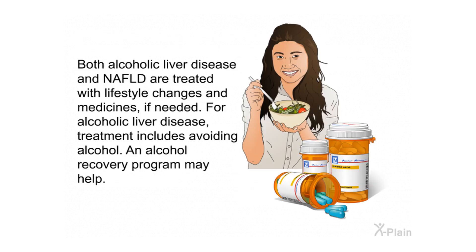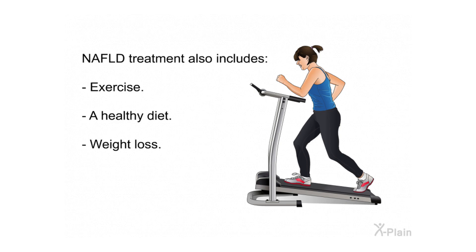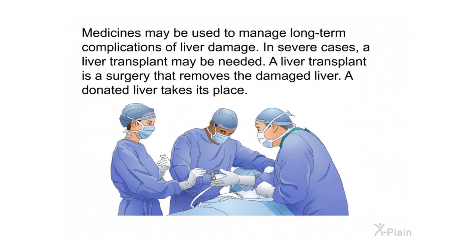Both alcoholic liver disease and NAFLD are treated with lifestyle changes and medicines if needed. For alcoholic liver disease, treatment includes avoiding alcohol, and an alcohol recovery program may help. Treatment may also include exercise, a healthy diet, and weight loss. Medicines may be used to manage long-term complications of liver damage. In severe cases, a liver transplant may be needed.